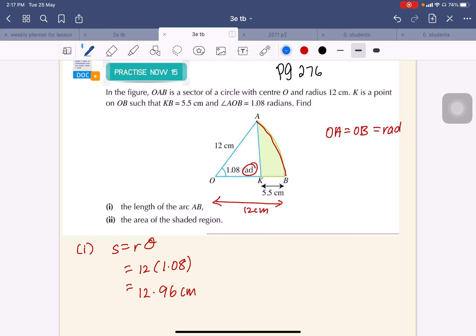Now let's look at part two, the area of the shaded region. To find the area of the shaded region, I will take the area of the sector subtracted by the area of the triangle.